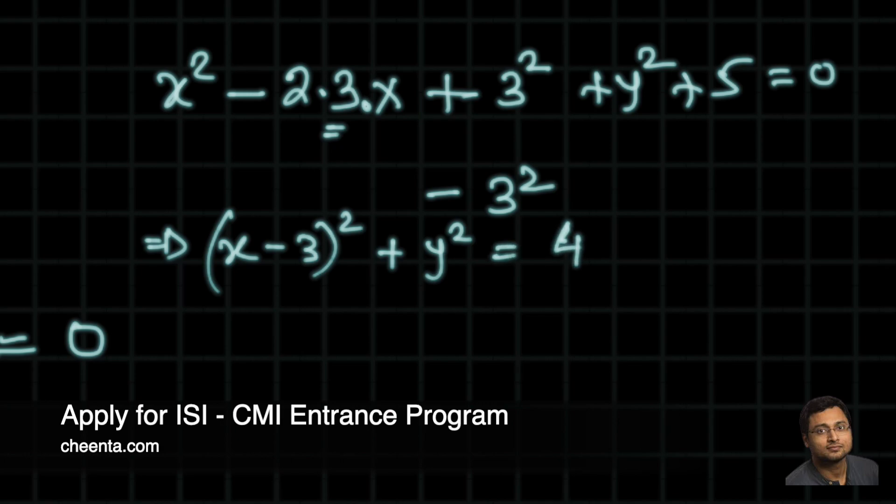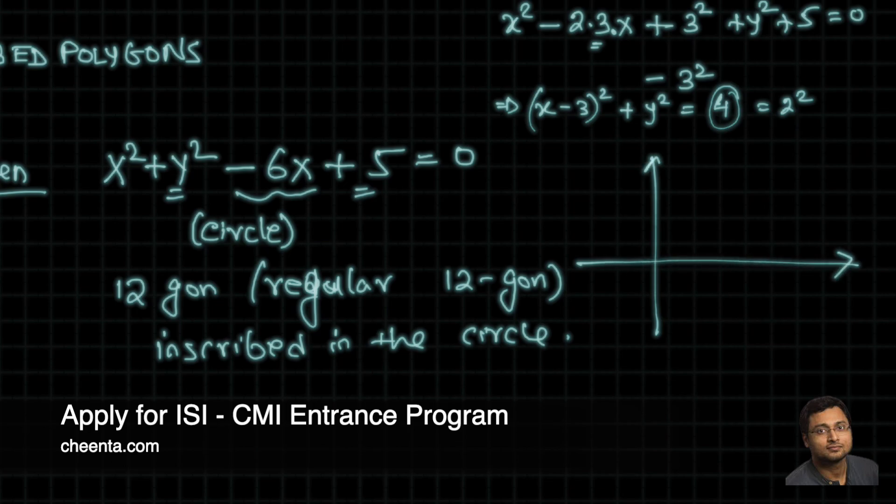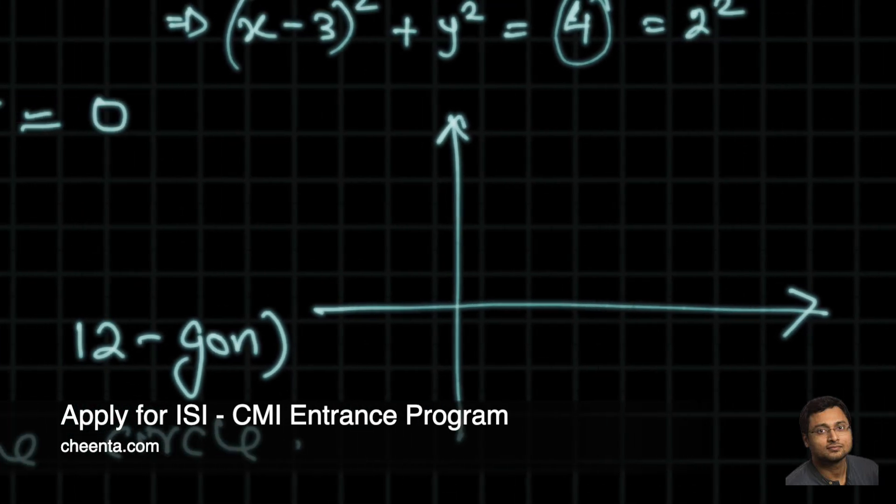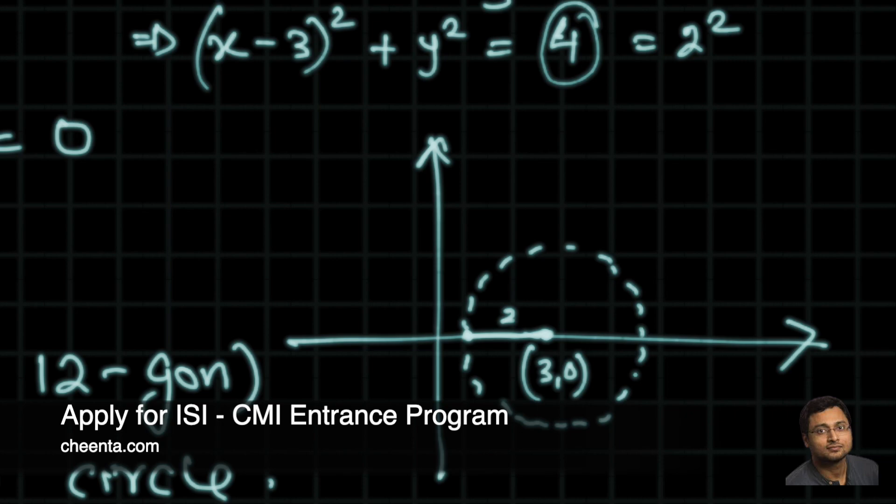We can write 4 as 2². So what type of circle is this? If you know a little bit of coordinate geometry related to circles, you will know that this circle has center at (3, 0) and a radius of 2 units. We don't need the position of the circle really, we need the radius of it. The radius happens to be exactly 2 units.